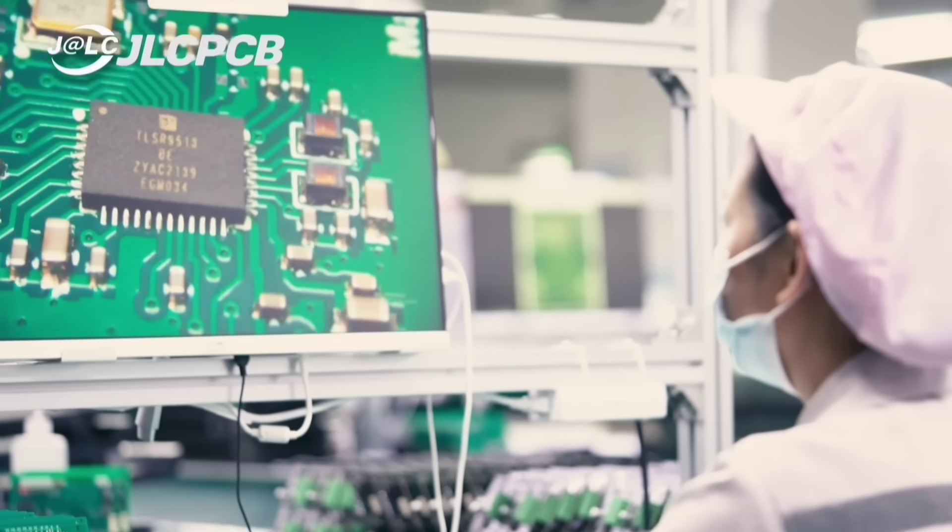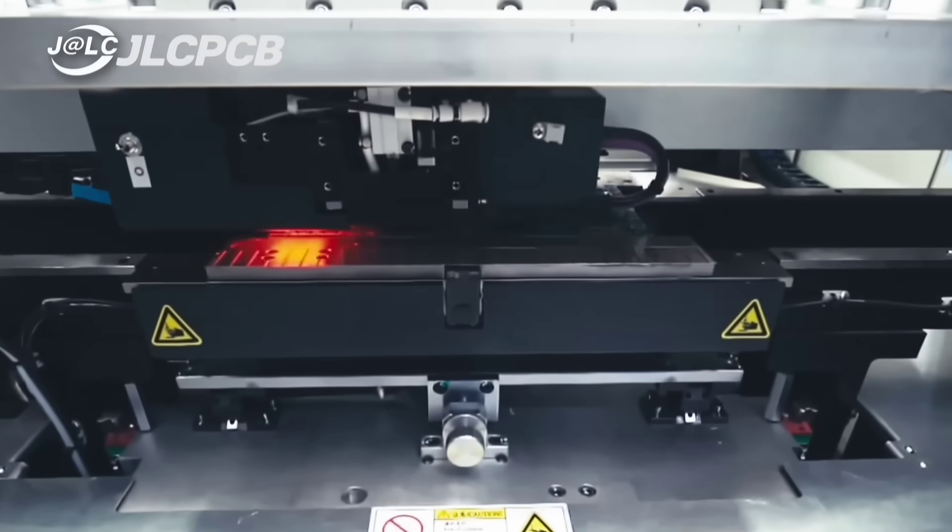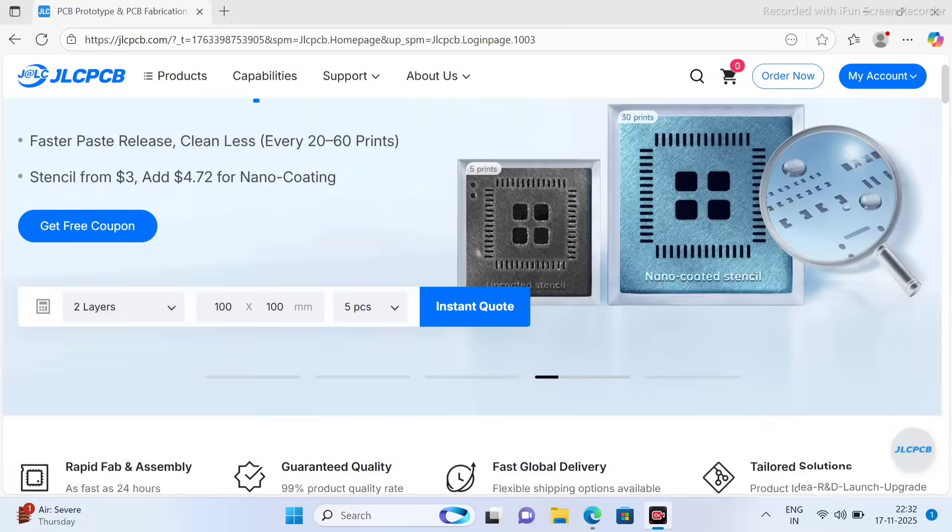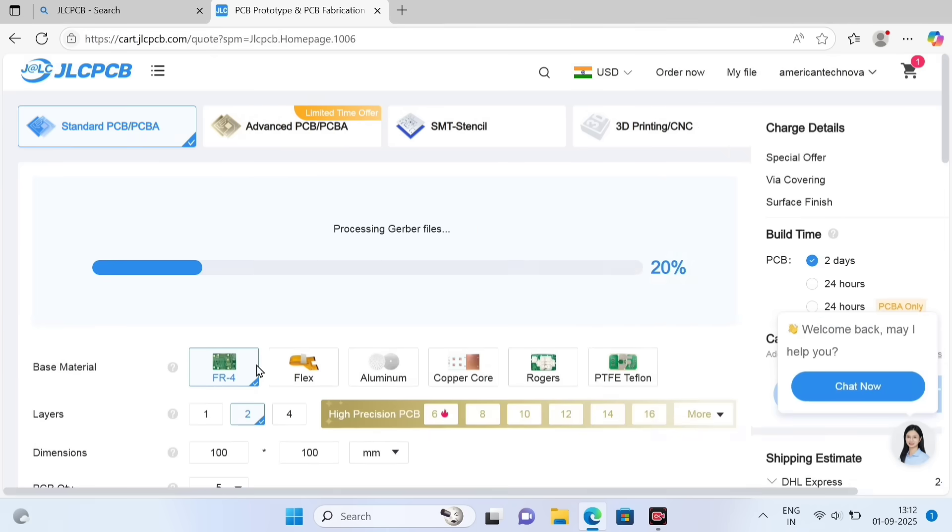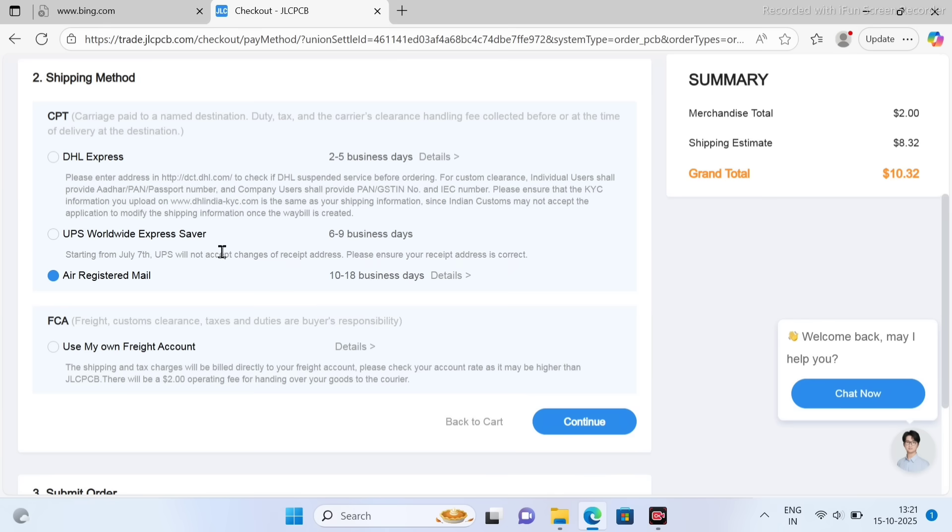JLCPCB also establishes a well-trained engineer's customer support team which is very handy and helpful. Ordering SMT service is quite easy at JLCPCB.com. First, you need to upload the Gerber file, turn on the SMT assembly button and confirm, go next and check out with preferred shipping method.